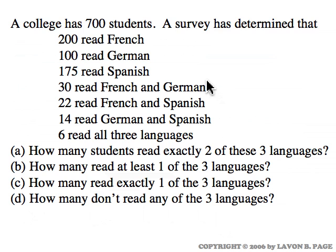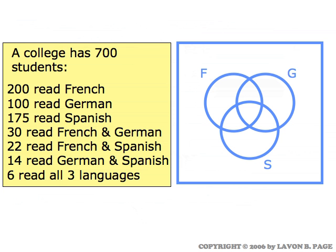Let's try to use a Venn diagram to do the bookkeeping in this question here. A college has seven hundred students, and we have data on the breakdown of the students — how many of them study each of three languages, how many study various combinations of languages — and then we have a series of questions. The strategy in approaching a question like this is to begin by putting all the information into a Venn diagram, and then after you have your Venn diagram correctly constructed, you should be able to answer any question that you're asked.